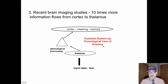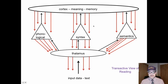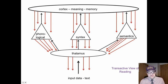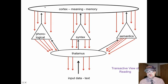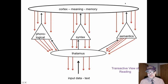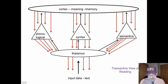Here is the old, outdated bottom-up phonological view of reading: input data from the text goes to the thalamus, we process letters — that's the outdated view. In the updated model, text goes to the thalamus; we use the three cueing systems to create meaning and give us clues, and that information flows up to the cortex where we make sense of it. But brain imaging studies found ten times more information flowing down from the cortex to the thalamus than from the thalamus up to the cortex.